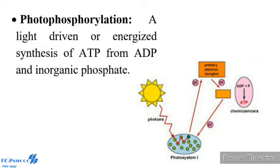Photophosphorylation occurs in two ways: Number one, non-cyclic; Number two, cyclic. Non-cyclic photophosphorylation is the normal process in which the electron expelled by the excited photocenter does not return to it. Cyclic photophosphorylation is the process in which the electron excited by the photocenter is returned to it after passing through a series of electron carriers.